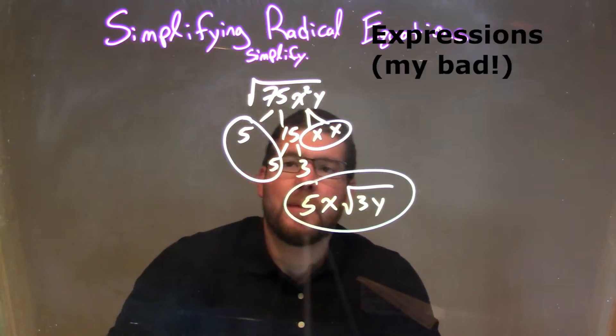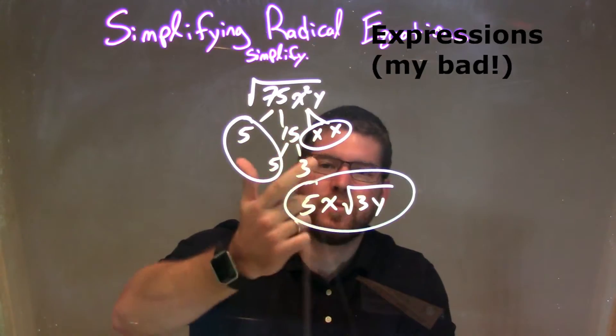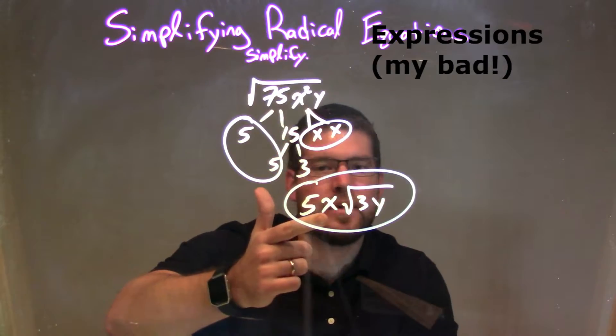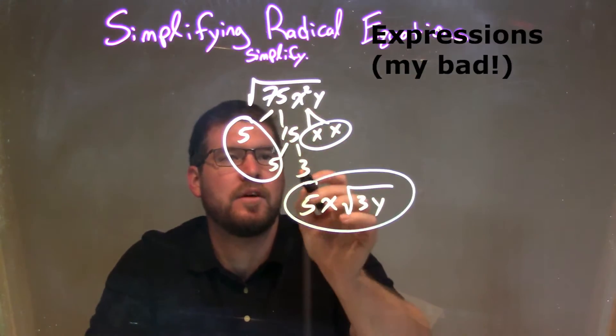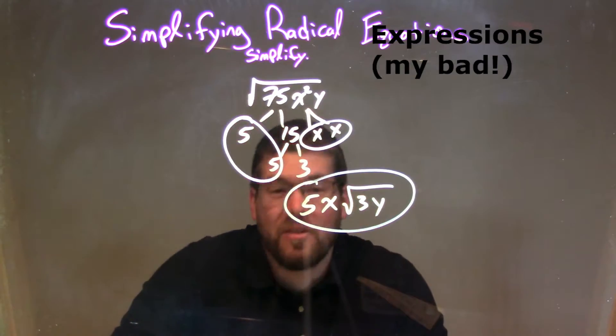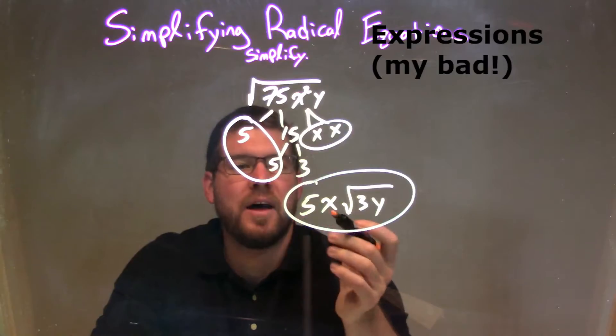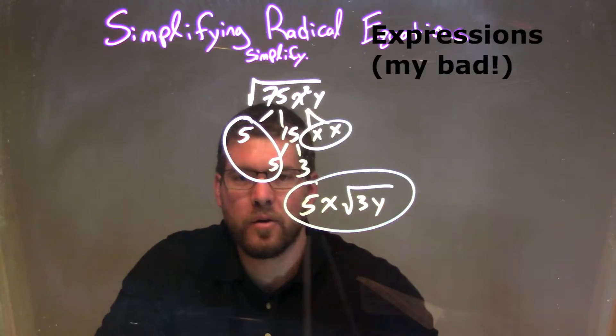And so now, I've circled my pairs. I have a pair of 5s and a pair of x's, represented on the outside of the square root as a single 5 and an x. Inside is just all the singles left over, 3 and y. And so our final answer just simplifies to be 5x times the square root of 3y. Thank you.